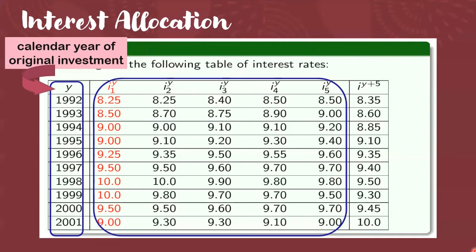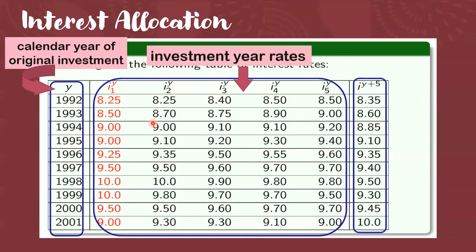Then we have these values. They are in percentage. So kunyari ito 8.25%, ito 8.70%. You call these rates as investment year rates. And then finally, we have the last column here. We call these rates as portfolio rates. So how do we use this table to allocate our credit interest? Let's discuss further.